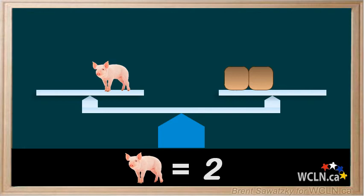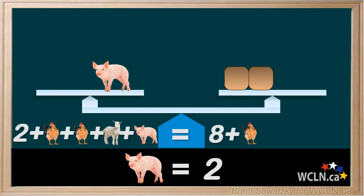Now if we had made an equation to represent this situation, it would have looked like this: two blocks plus two chickens, a goat, and a pig is equal to eight blocks and a chicken. We removed a chicken from each side, then another chicken from the left and a block from the right, then a goat from the left and three blocks on the right, and finally the last two blocks on each side. In the end we kept everything balanced and got the pig by itself with two blocks on the right. A nice proof.